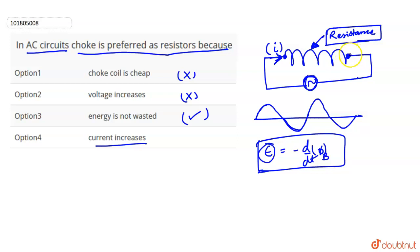The induced EMF is again generated. The induced EMF produces current in the opposite direction. This direction will oppose, so current will decrease. So that's the answer - energy is not wasted.